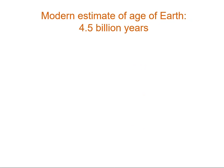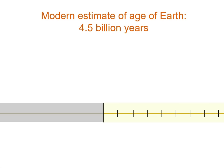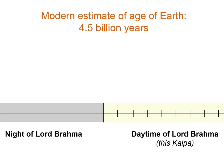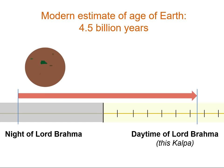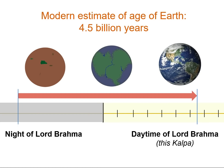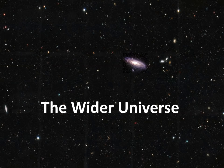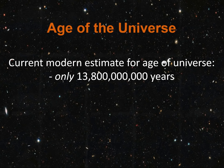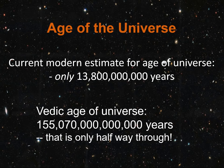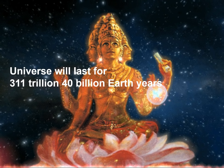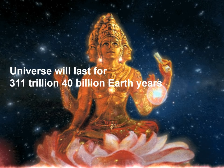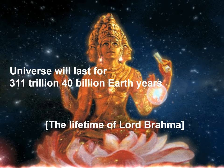The scriptures explain that we're currently just over 2 billion years into this day of Lord Brahma. The modern estimate of the age of the Earth is about 4.5 billion years. Lining up the modern estimated age of the Earth with the Vedic calendar, we see that the previous night of Lord Brahma corresponds with the primordial stages of the Earth. The current modern estimation of the age of the universe is about 13.8 billion years. However, the Vedic age of the universe comes to about 155 trillion years so far — and that's only halfway through. It is believed in the Vedic tradition that the universe will last for 311 trillion, 40 billion Earth years — corresponding with the lifetime of Lord Brahma.